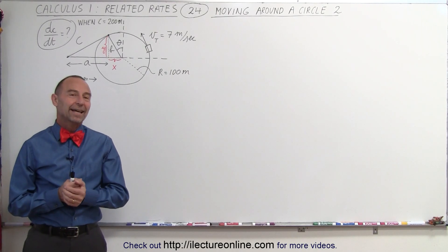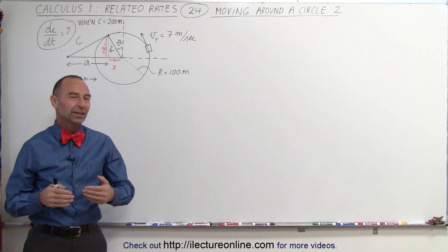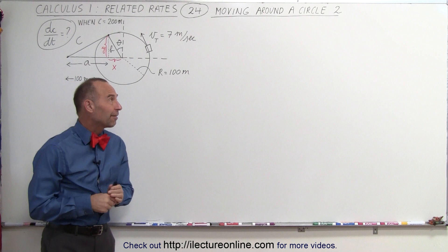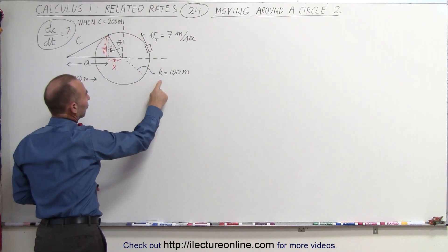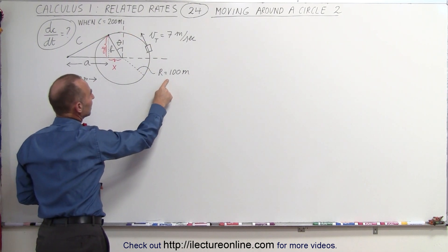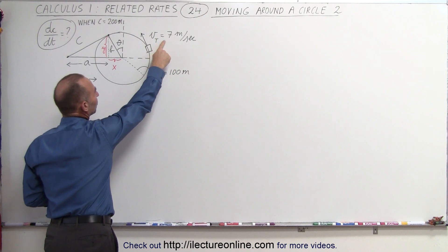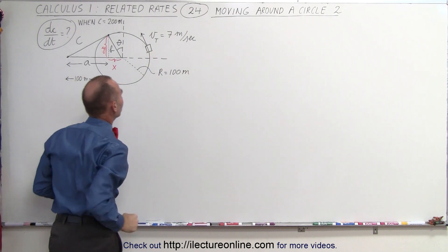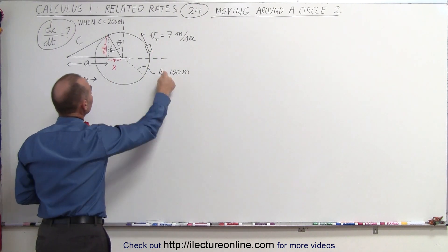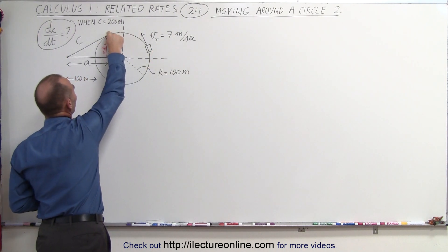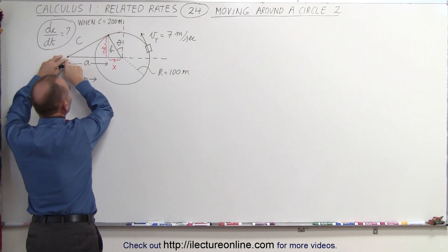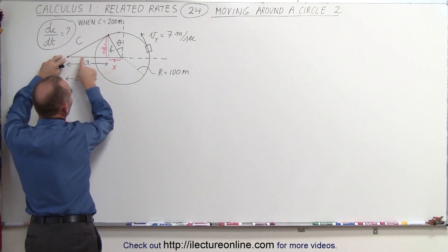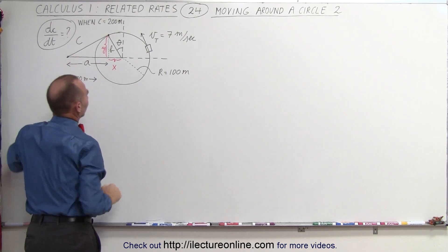Welcome to iLecturnLine — now for something a little bit more challenging. Here we have an object going around a circular path of radius 100 meters at a tangential speed of 7 meters per second. At some point it will reach a point on the circle where it will be 200 meters away from a spot outside the circle, which is 100 meters away from the edge of the circle.